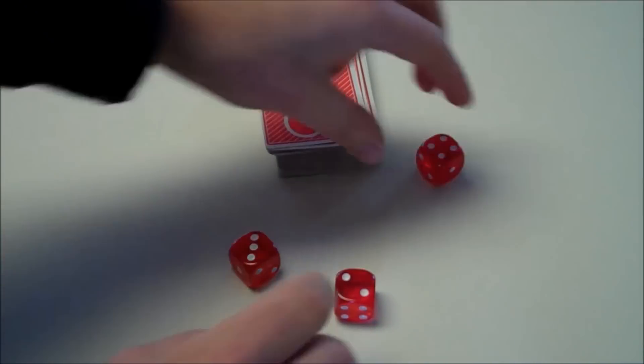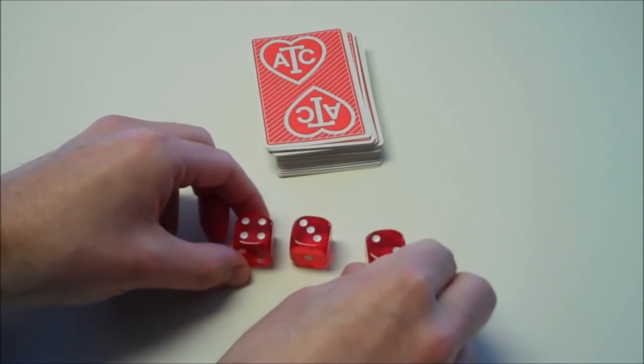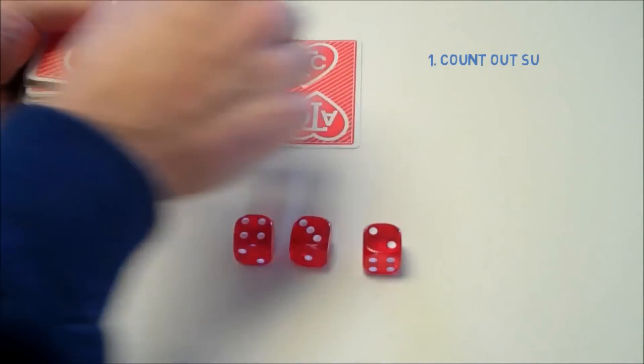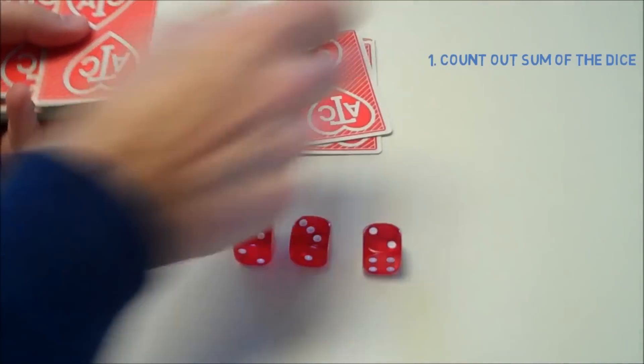So let's try the trick again. We have a roll of four, three, and two. So this adds up to nine. So we're going to count out nine cards.